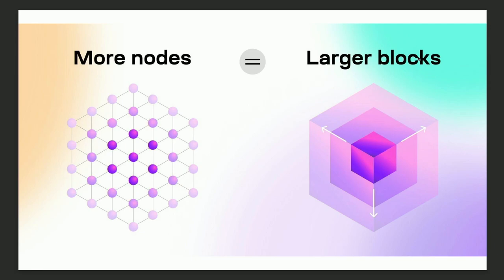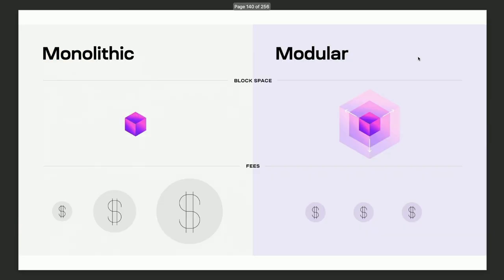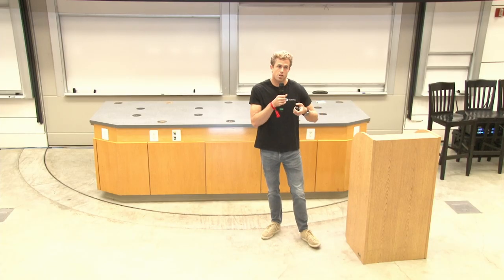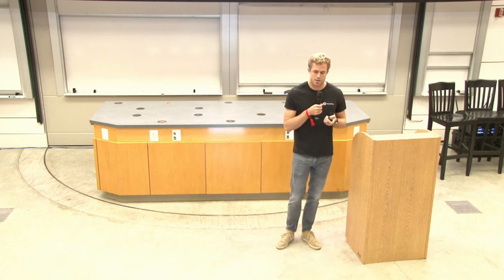One key feature of modular blockchains for scalability is that as the number of nodes in the network increases, you can support larger and larger blocks. Rather than having a fixed block size where fees increase as users join, in a modular blockchain you have elastic, abundant block space. As more users join and run nodes, you can keep growing the block size such that fees can remain constant.